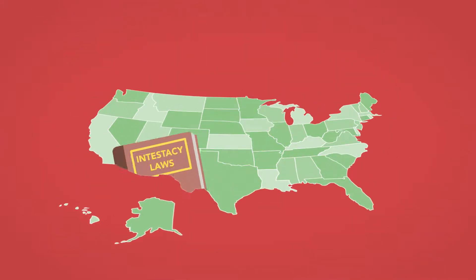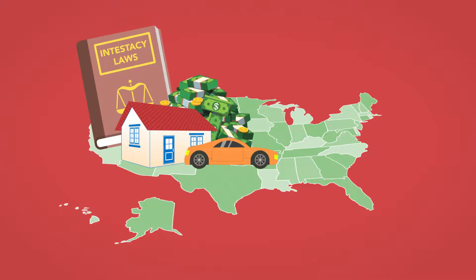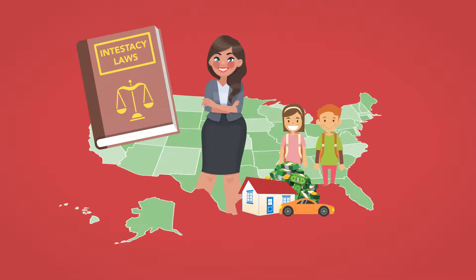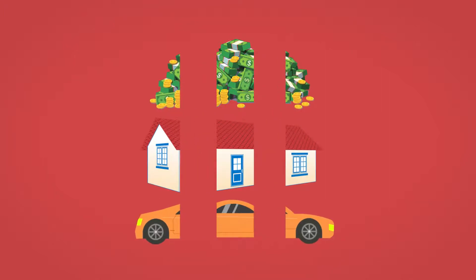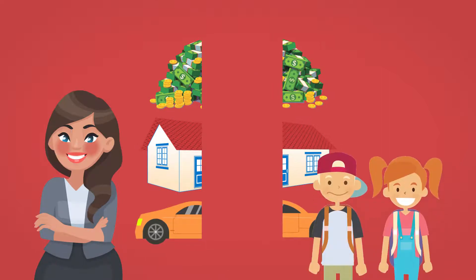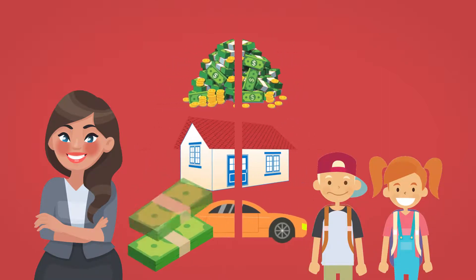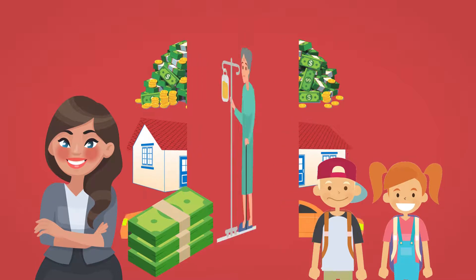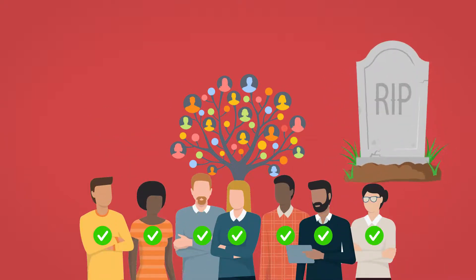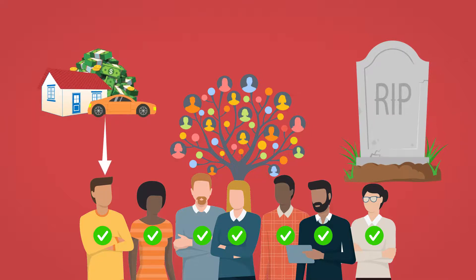States typically design their intestacy laws to direct a decedent's property to his family. Such laws invariably give priority to the decedent's spouse and children, if any, dividing the assets between them in proportions that vary from state to state. Some states allocate half the estate to the spouse and the other half to the children, while others set aside a base amount for the spouse before splitting the rest. Only if a person dies without a spouse or children do intestacy laws consider more remotely related people. These statutes work well for many people, giving the deceased person's assets to those he may have chosen in any case.